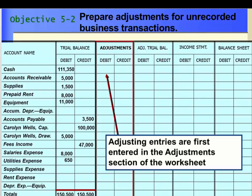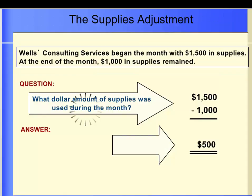Now it is time to move to the next set of columns. We need to prepare adjustments for unrecorded business transactions. The process of updating accounts at the end of an accounting period for unrecorded items that belong to the period is referred to as making adjustments or adjusting entries. The adjustments are made in the Adjustments column.